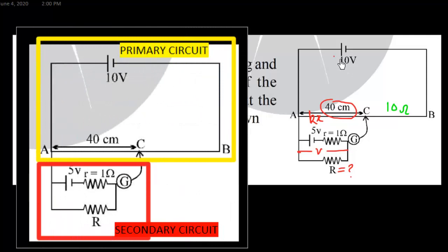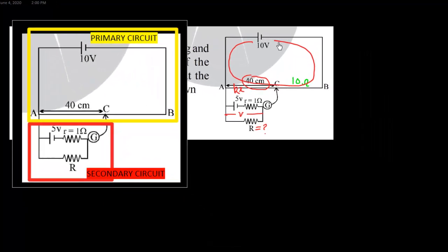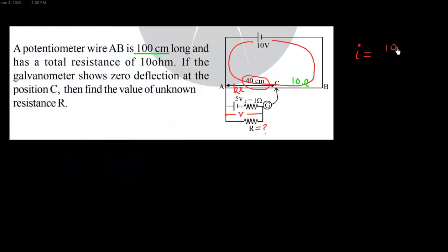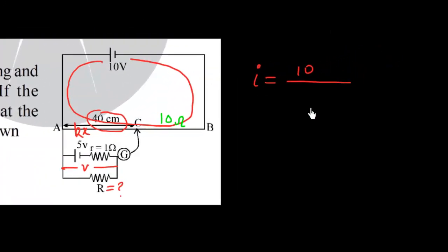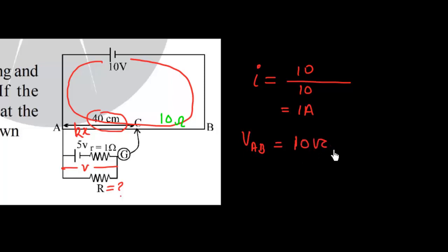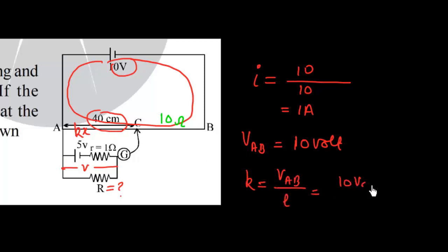The current in the primary circuit I equals 10 volt upon 10 ohm, which is 1 ampere. VAB equals 10 volt because there is no internal resistance, so total 10 volt will be across the A-B wire. K equals VAB upon its length, that is 10 volt upon 100 centimeter.